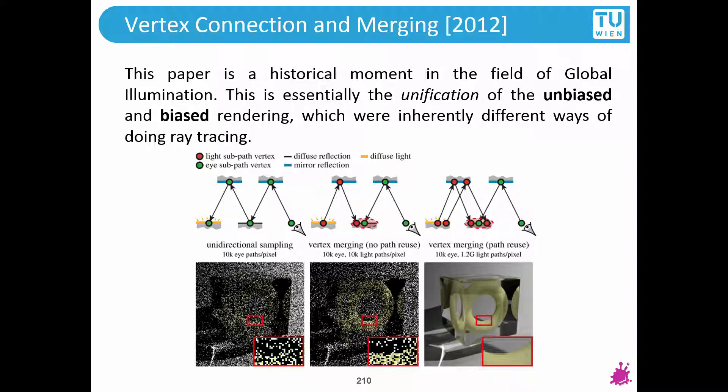That's huge because biased and unbiased rendering were the two biggest schools in photorealistic image synthesis. The unbiased guys were the rigorous, scientific, 'let's sample all the light paths and not cut corners' type of people. The biased guys said: let's cut corners because this takes forever, so let's use optimization techniques. What vertex merging gives you is an algorithm that starts out biased but has less and less bias as time goes by, eventually ending up as an unbiased technique. This is a historical moment that unifies both schools. Wonderful piece of work.